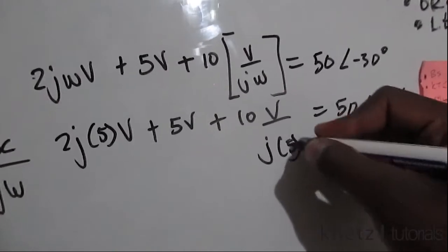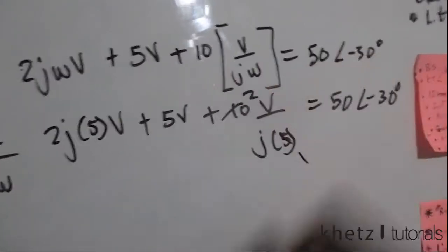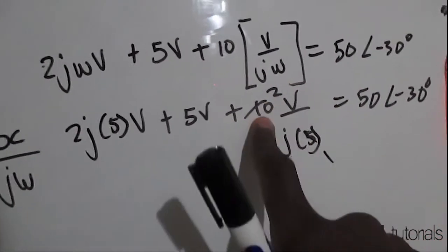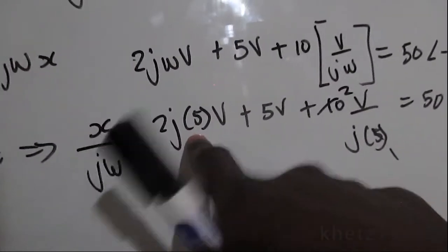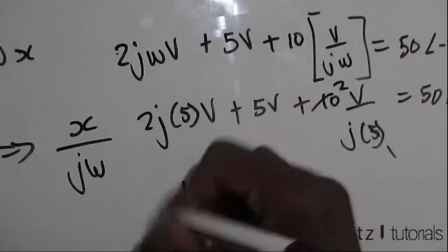You can start here by just dividing. You have 2 over there because 5 into 10 is 2. Now 2 times 5 is 10, so you have j10v plus 5v.